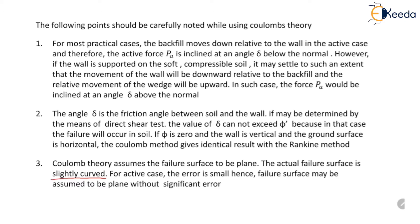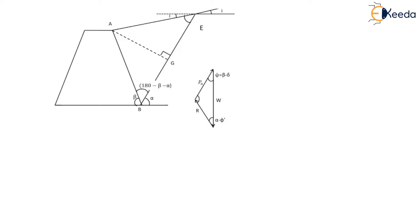For the active case, the error introduced by assuming a planar failure surface is small. Hence, the failure surface may be assumed to be plane without significant error. So far we have discussed Coulomb's wedge theory for the determination of PA by the graphical method using the force polygon.